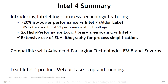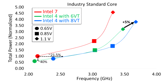With a fin pitch of 30nm, a contact gate poly pitch of 50nm between gates, and a minimum metal pitch of 50nm, the Intel 4 transistor is significantly smaller compared to the Intel 7 cell, as listed in the table below. For scaling, Intel 4 provides double the number of transistors in the same area compared to Intel 7. However, this reasoning is applied only to logic.